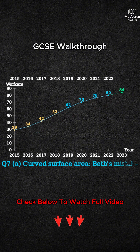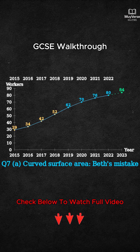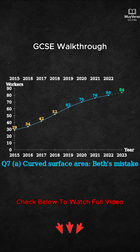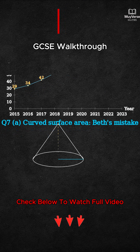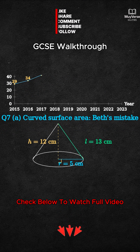Question 7 Part A: A right cone with radius 5 centimeters, perpendicular height 12, and slant height 13. The curved surface area formula is pi times r times L, where L is the slant height. We draw the cone and label R equals 5, H equals 12, and L equals 13.